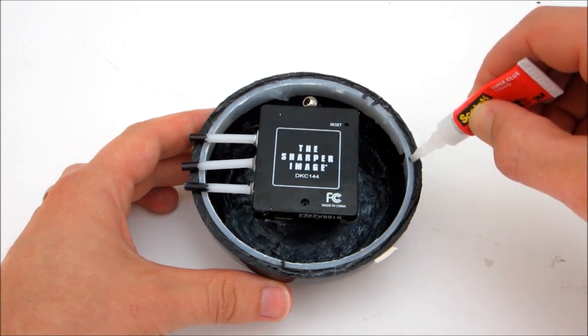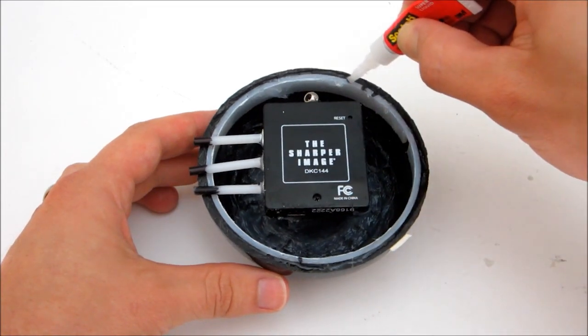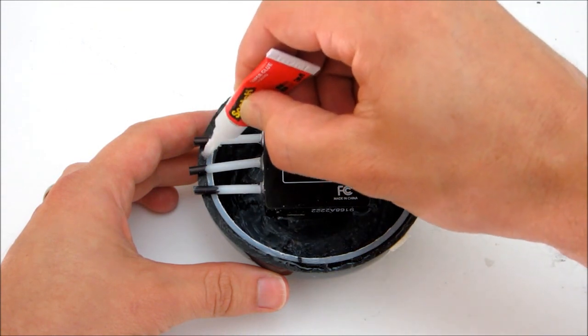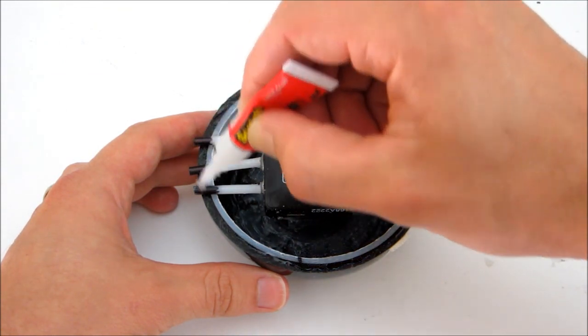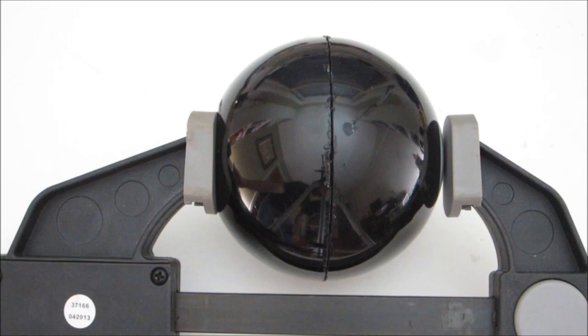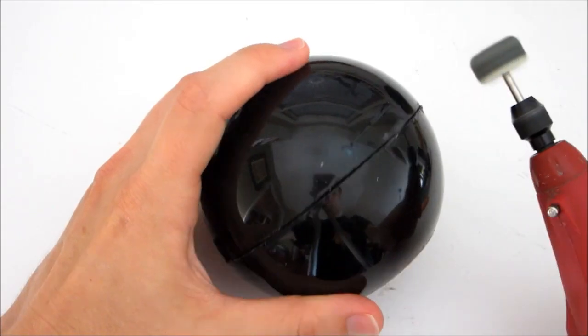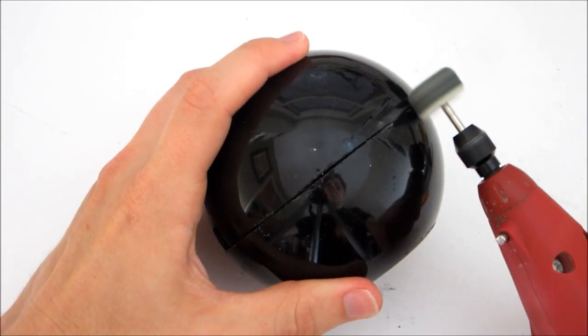Lastly, you need to glue the two halves back together. Apply glue all around the edges of both halves. Try to avoid dripping glue on the outside of the housing. Then put the two halves back together and clamp them until the glue dries. If you want, you can then polish out any scratches that you made.